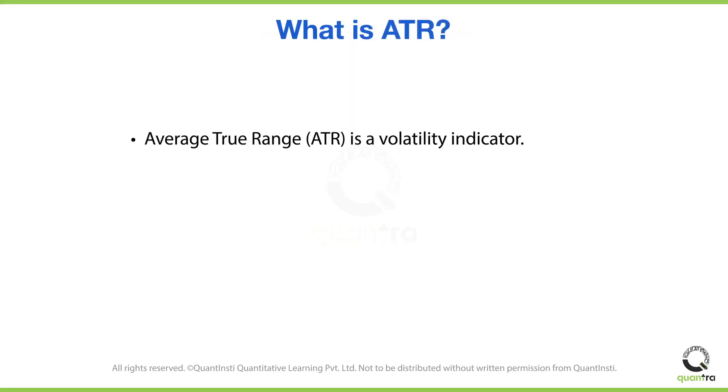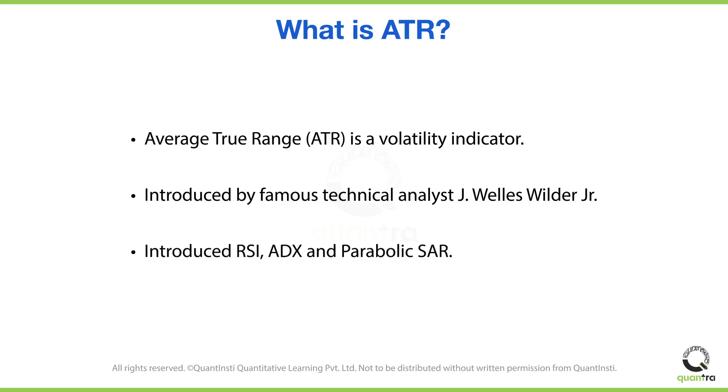ATR is a volatility indicator that shows us how much an asset may move during a given time frame. The indicator was first introduced by Mr. J. Welles Wilder Jr., who was a very famous technical analyst, and also known for introducing several other core indicators such as the RSI, ADX, and Parabolic SAR.